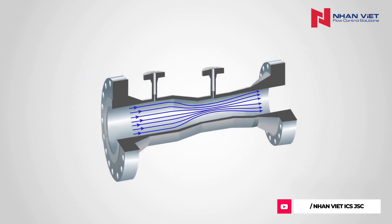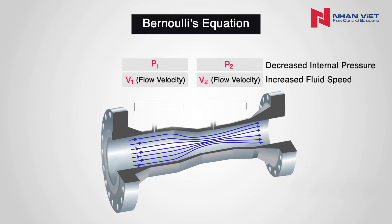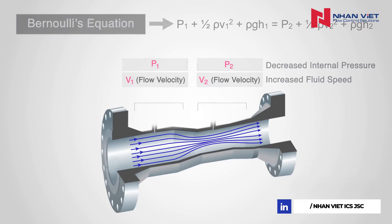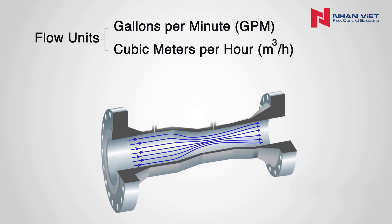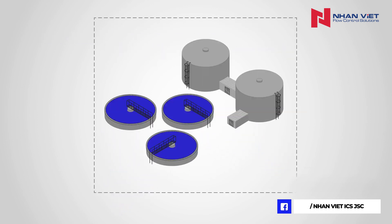These measurements are sent to the electronics housing where the signal processing is done. By using Bernoulli's equation, which states that the pressure drop across the constriction is proportional to the square of the flow rate, the delta P is then converted into units of flow. These units of flow can be gallons per minute or cubic meters per hour. Using DP transmitters to measure flow works best on fluids that are relatively clean and of low viscosity. Delta P flow transmitters support a small span or range, which is why they are very commonly used in water and wastewater applications.